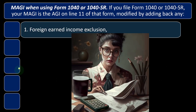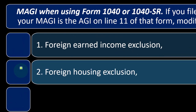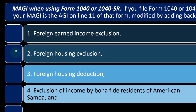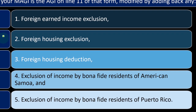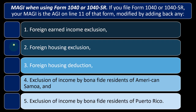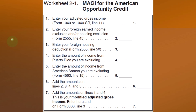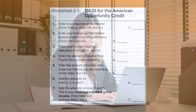The modifications to AGI that produce MAGI include: (1) Foreign Earned Income Exclusion, (2) Foreign Housing Exclusion, (3) Foreign Housing Deduction, (4) Exclusion of Income by Bona Fide Residents of American Samoa, and (5) Exclusion of Income by Bona Fide Residents of Puerto Rico. A worksheet is available if these components apply; if they don't, MAGI is simply your AGI, and software can help in those scenarios.